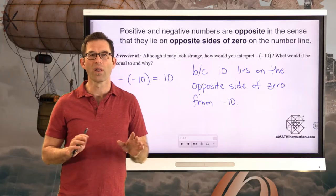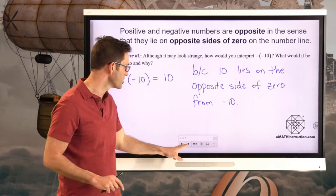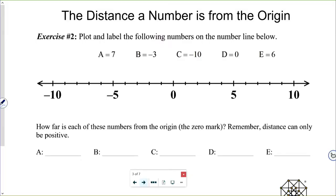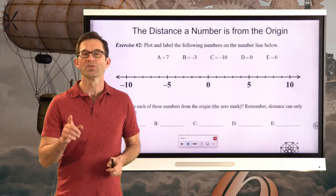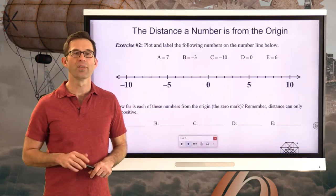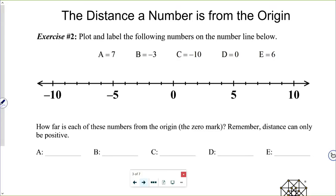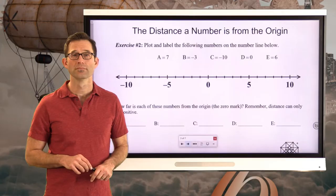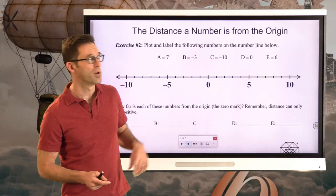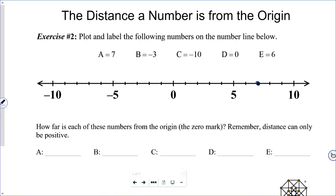Now let's look at the distance a number is from the origin in exercise number two. Plot and label the following numbers on the number line below. We've been doing this for a few lessons now. A is at seven, B is at negative three, C is at negative ten, D is at the origin — zero — and E is at six.